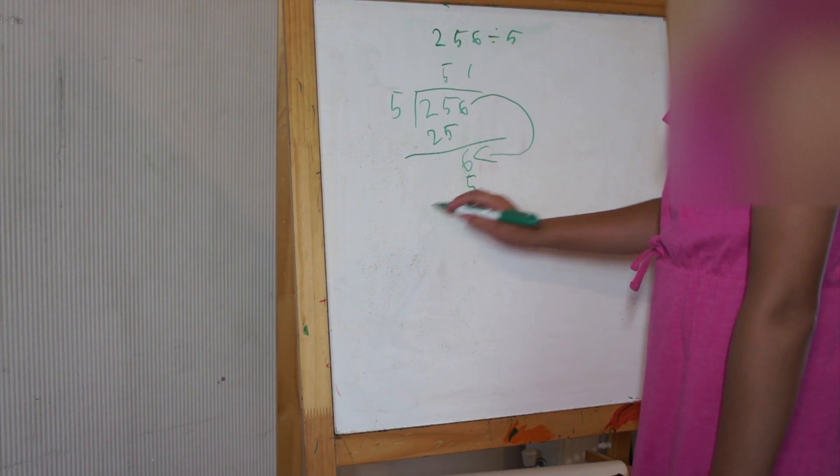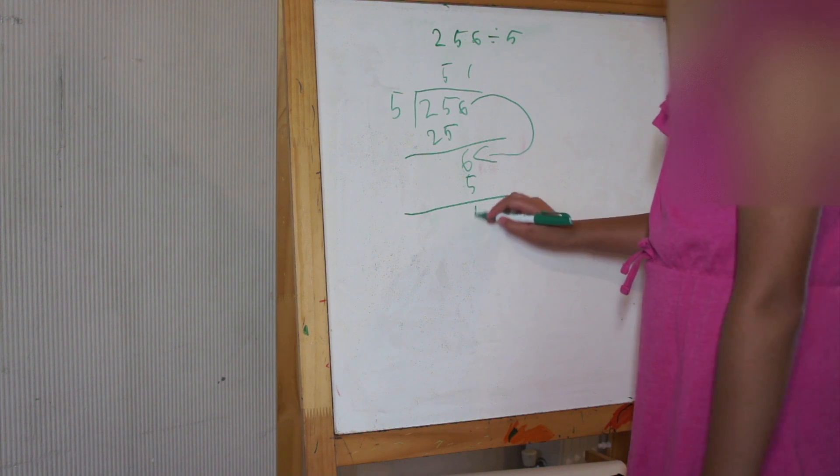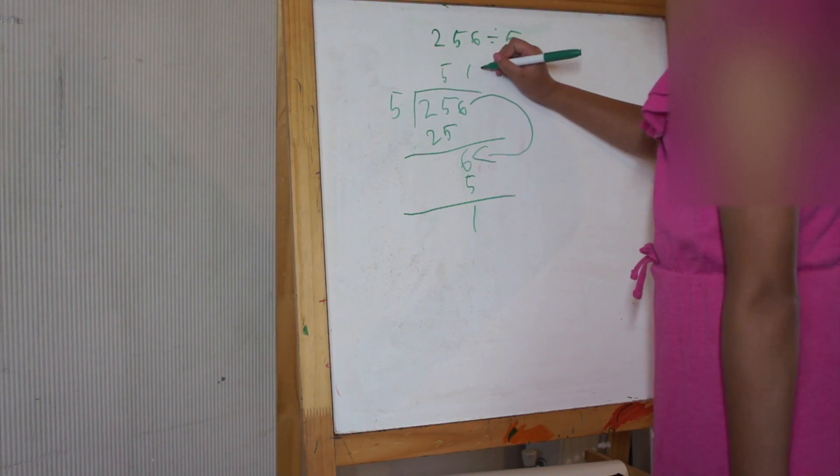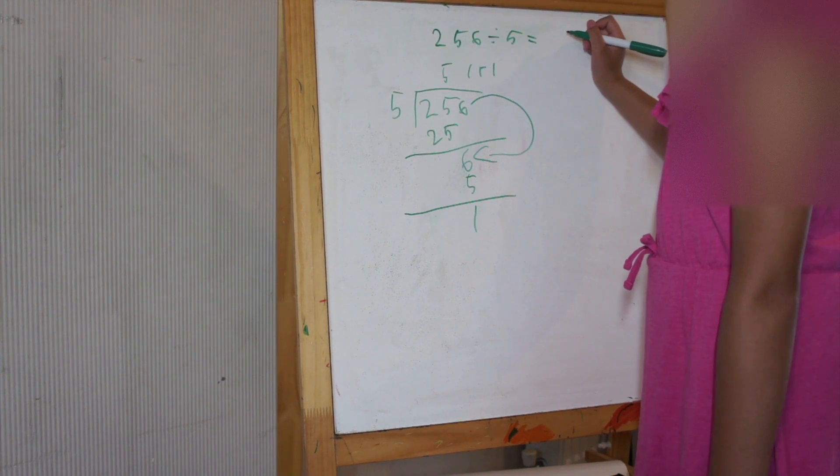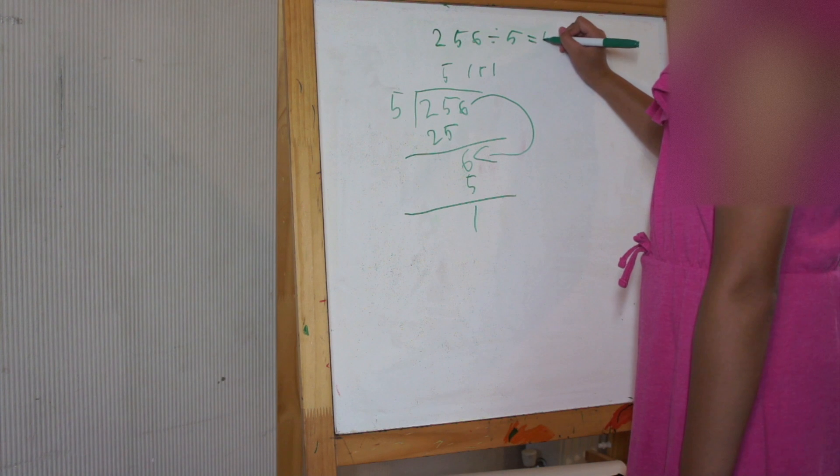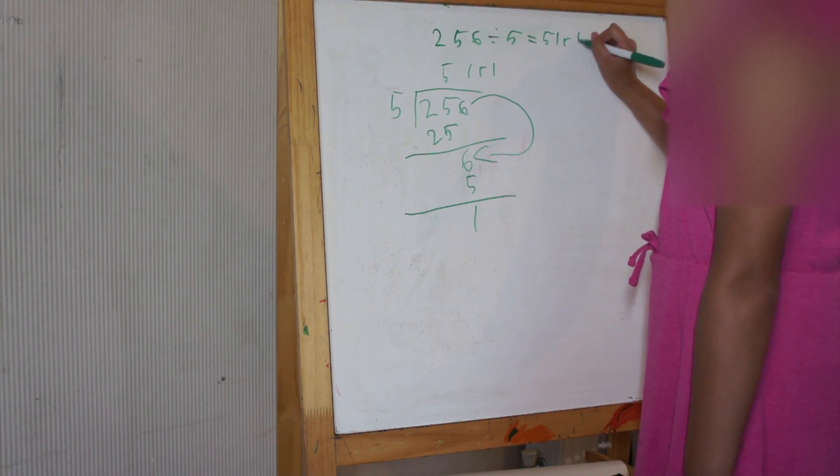And that is close to 6. Then we subtract it and there's a remainder 1. So we put r and 1 over here. So 256 divided by 5 equals 51, remainder 1.